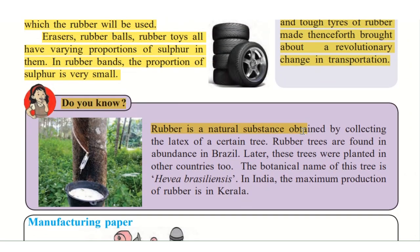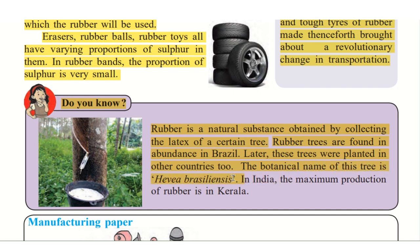Rubber is a natural substance obtained by collecting the latex of a certain tree. Latex is the juice — the sap — that comes out of this tree. The rubber trees are found in abundance in Brazil, and later these trees were planted in other countries too. The botanical name of this tree is Hevea Brasiliensis. In India, the maximum production of rubber is in Kerala.